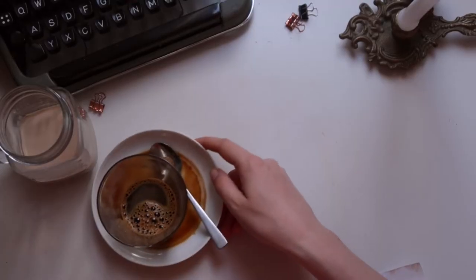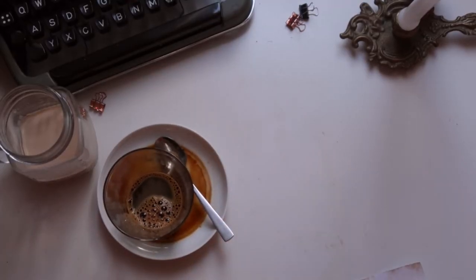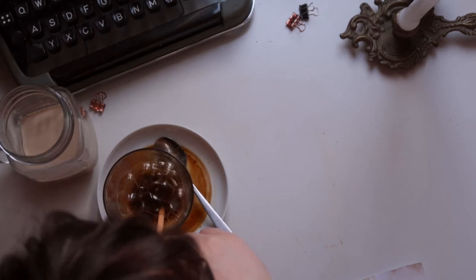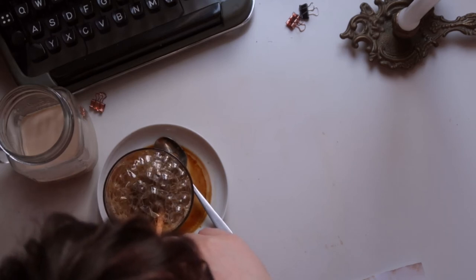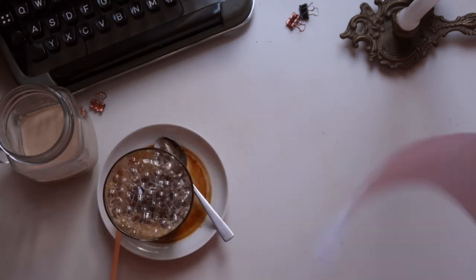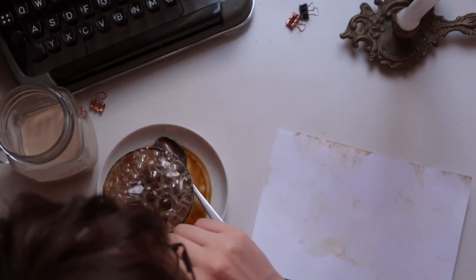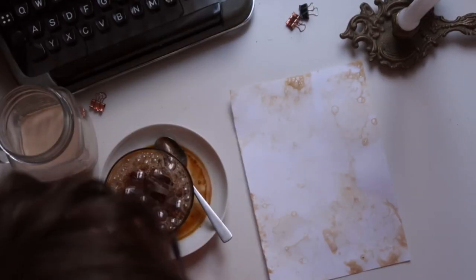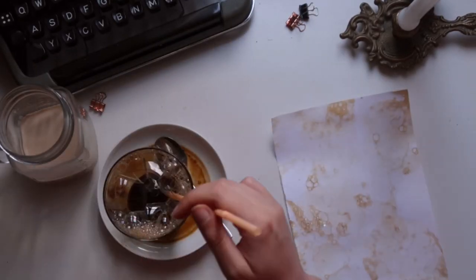For the next pattern we first need to add the dish soap to the coffee. Then blow some bubbles into the coffee and move the paper over the bubbles to create a mark on the paper. This step we repeat until we are satisfied with the pattern on the paper. It creates a fine bubble pattern. I really like this one as well.